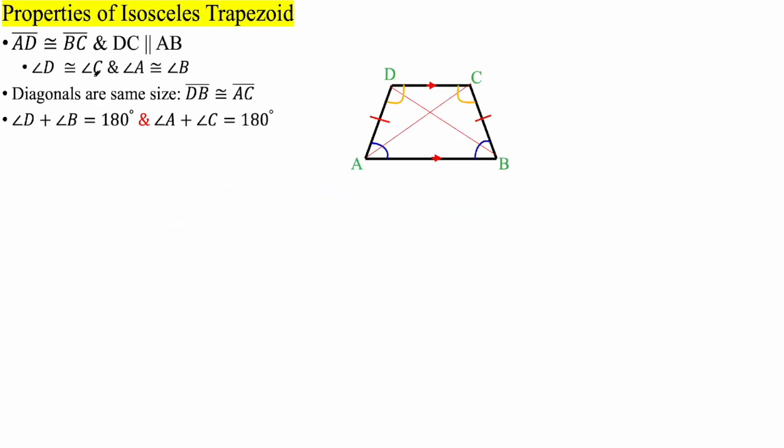You know, we're just applying this principle right here. So the measure of angle D and C are congruent, and A and B are congruent. And that's pretty much it for this problem.